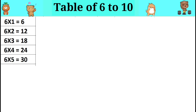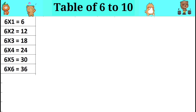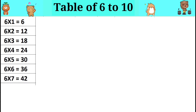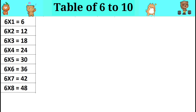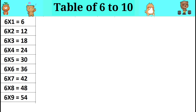Six fives are thirty. Six sixes are thirty-six. Six sevens are forty-two. Six eights are forty-eight. Six nines are fifty-four. Six tens are sixty.